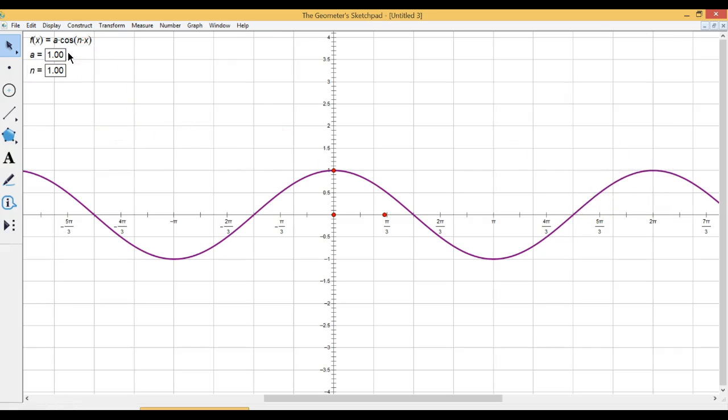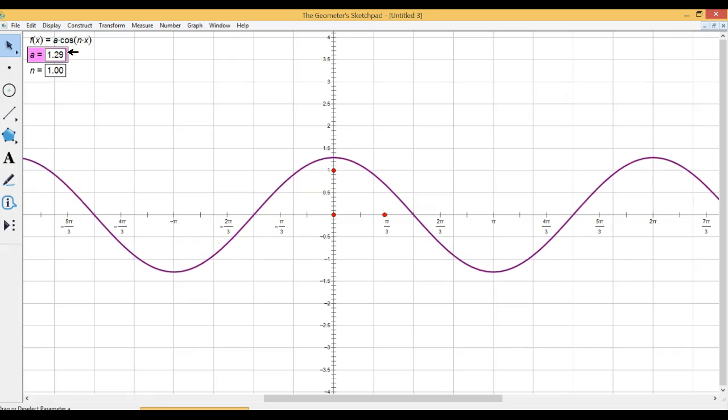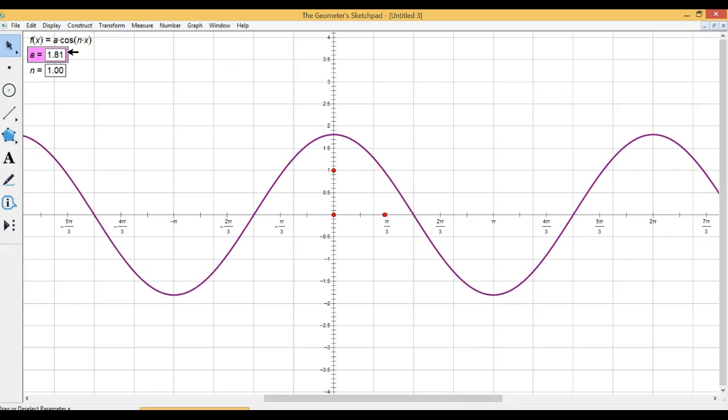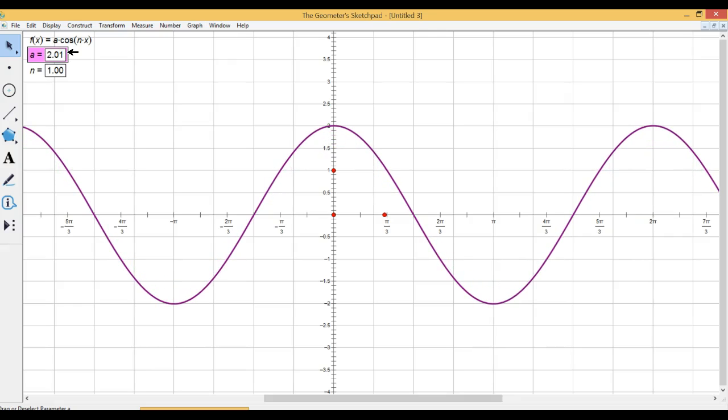And as A moves around, we'll see our altitude again move. So 1.4, 1.5, take it up to 2, and see the outcome of that. There we go. So there's y equals 2 cos x at the moment.